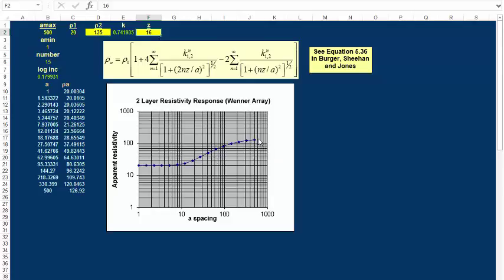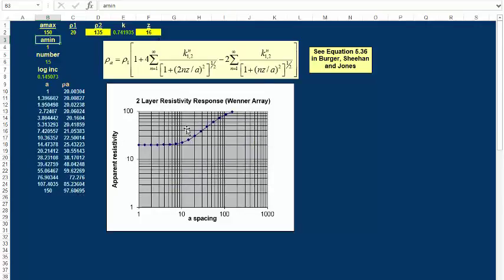And so we're seeing kind of an approximate value for the deeper layer. And if we change this distance to, let's say, 150, then you can see we probably, you know, trying to guess what the resistivity of the second layer is, we would be off.